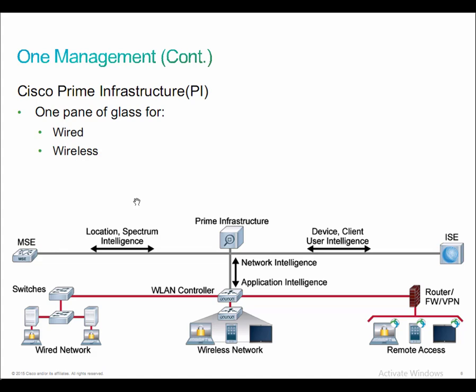Building on the one network and one policy, of course, is one management. Cisco Prime Infrastructure is a network management tool that provides lifecycle management of the entire network infrastructure from one interface. Prime Infrastructure provides things like provisioning, monitoring, optimization, and troubleshooting across the board.